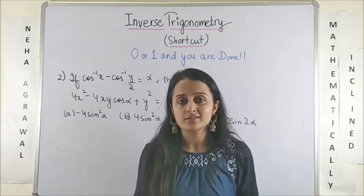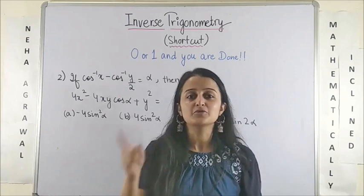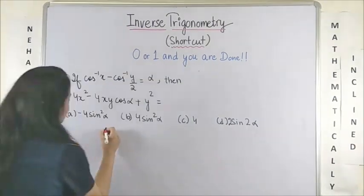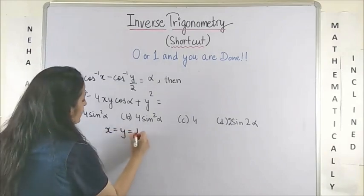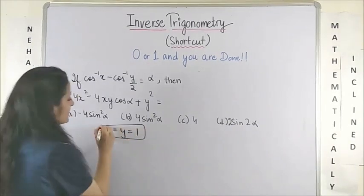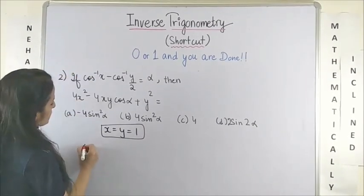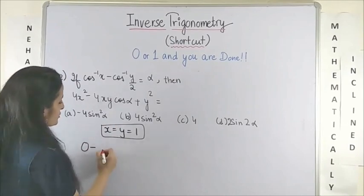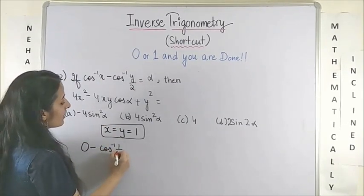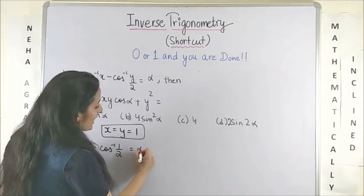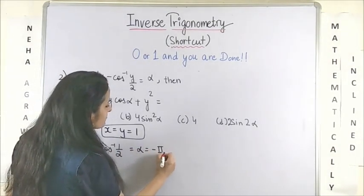Whereas, I am talking of MCQs where the correct answer is 1. So what we do is, let's take x and y as 1. What happens is, cos inverse of 1 which would be 0 minus cos inverse of half which would be pi by 3. So that means, my alpha is minus pi by 3.